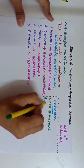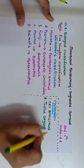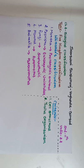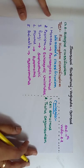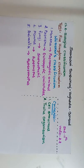The second criteria is thallus organization. In this criteria, Whittaker discussed about cell level organization — that is, cellular organization, tissue level organization, organ level organization, and organ system level organization are included.